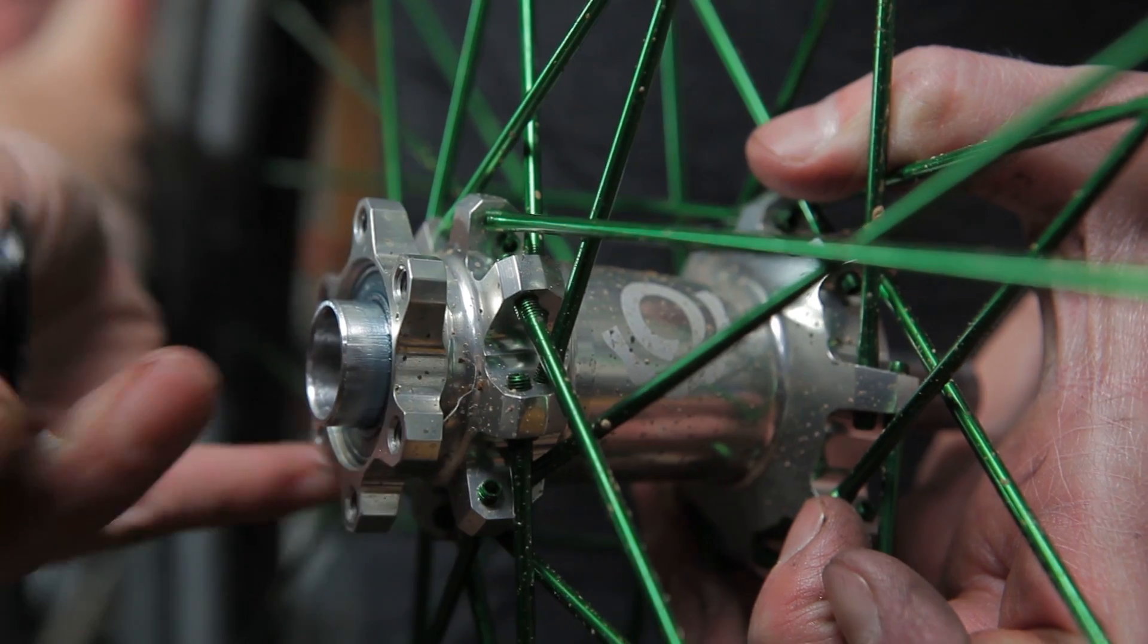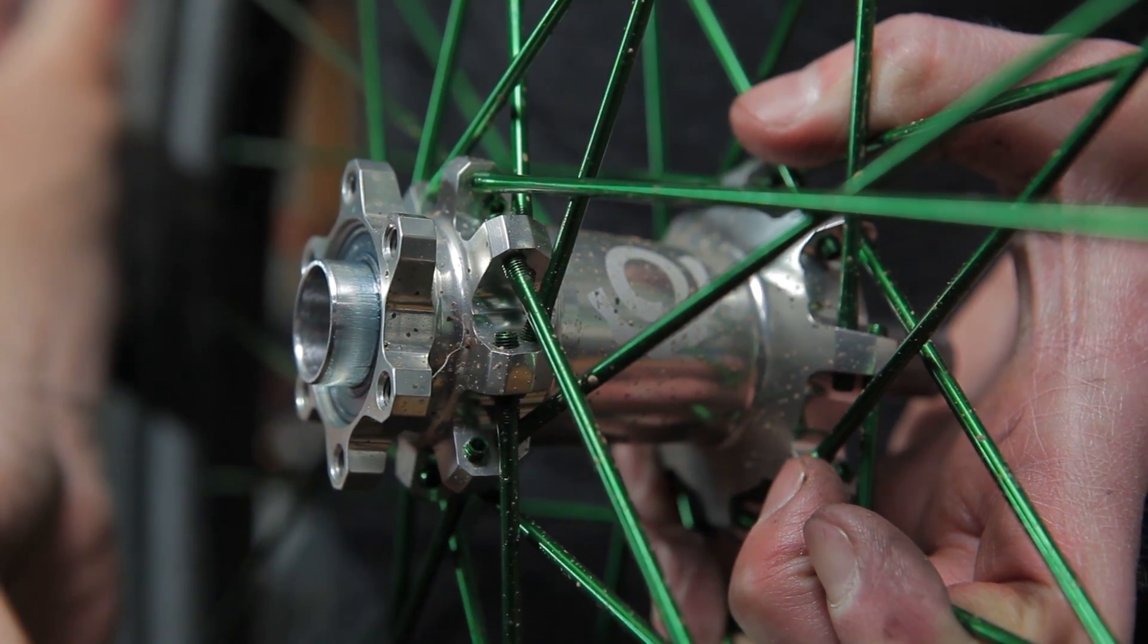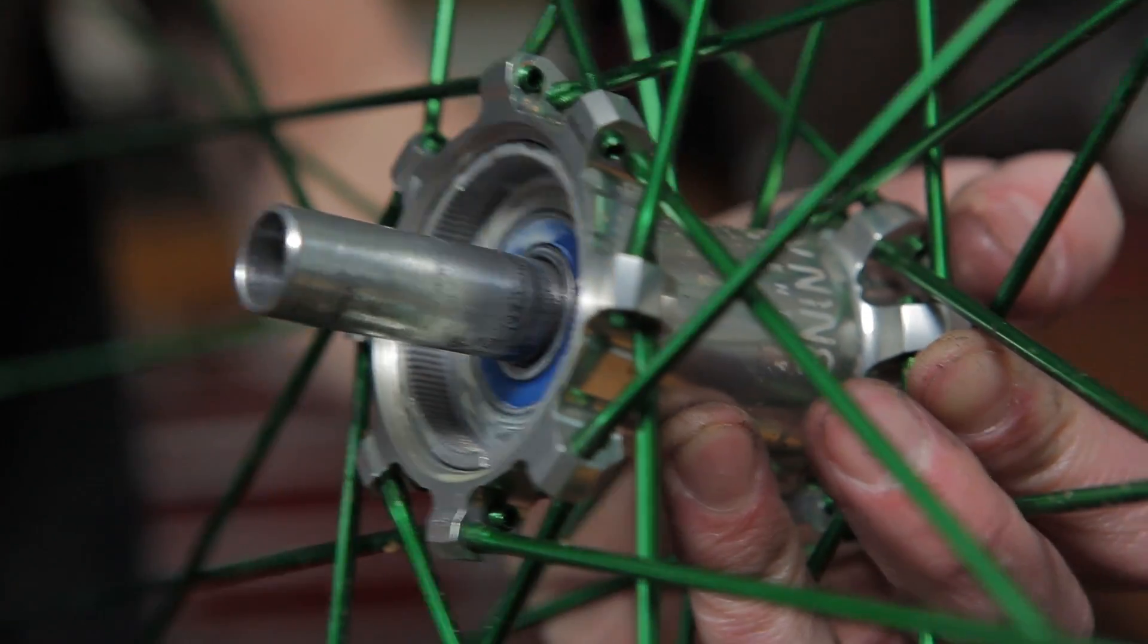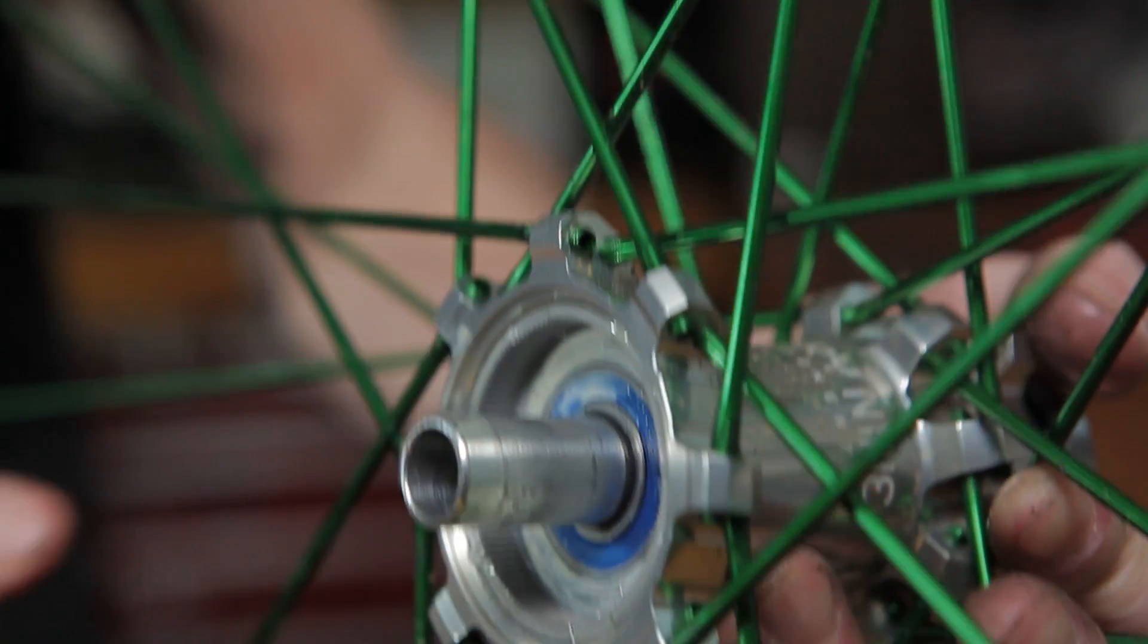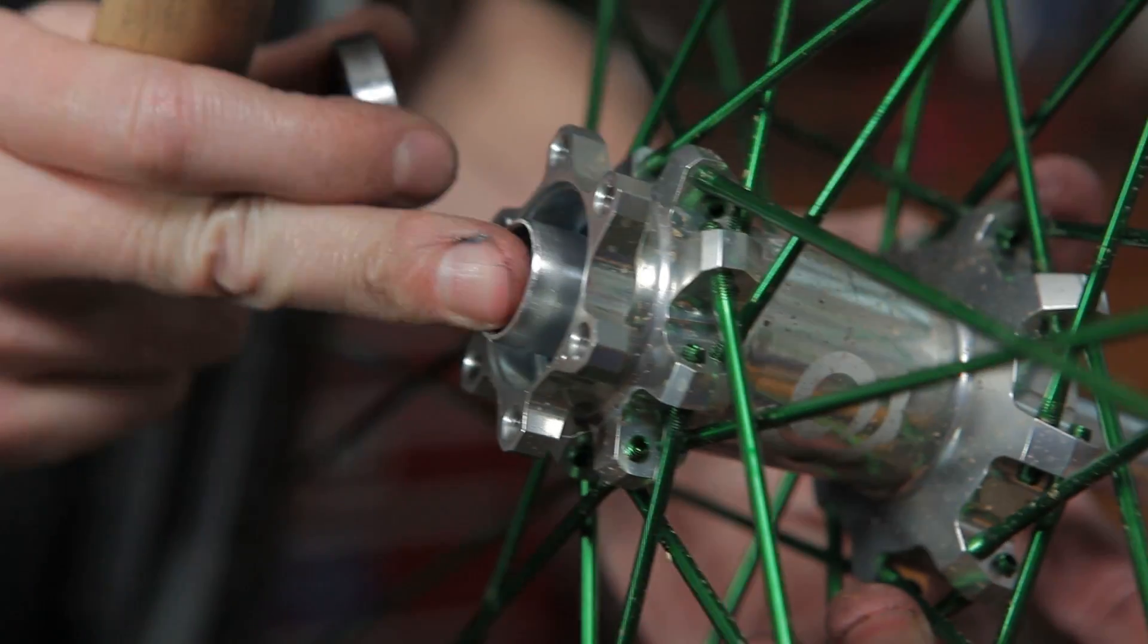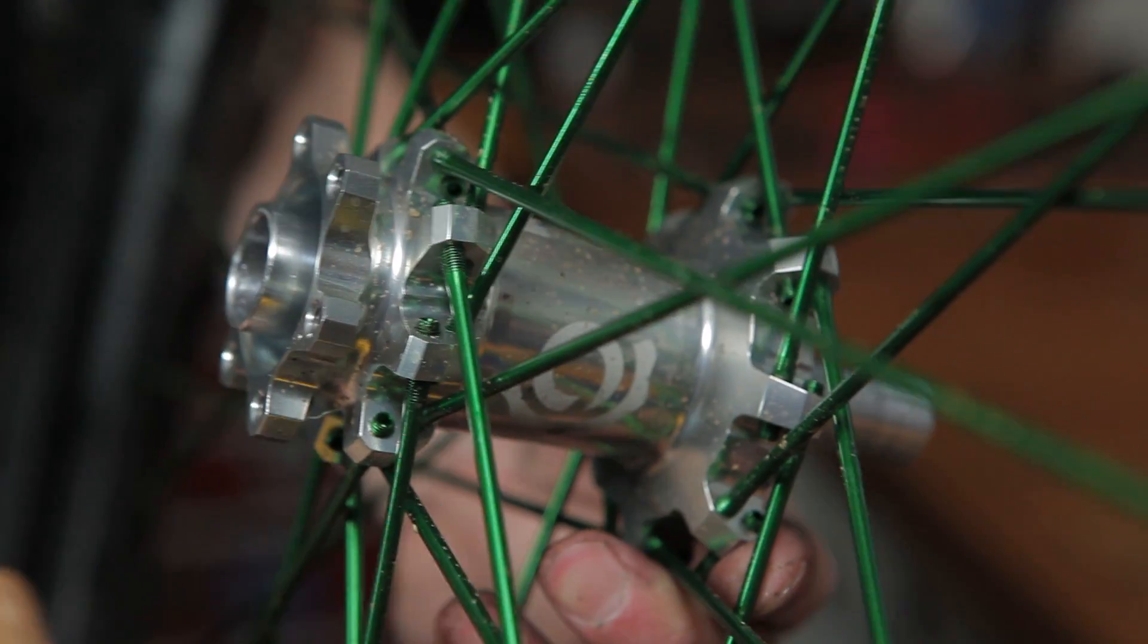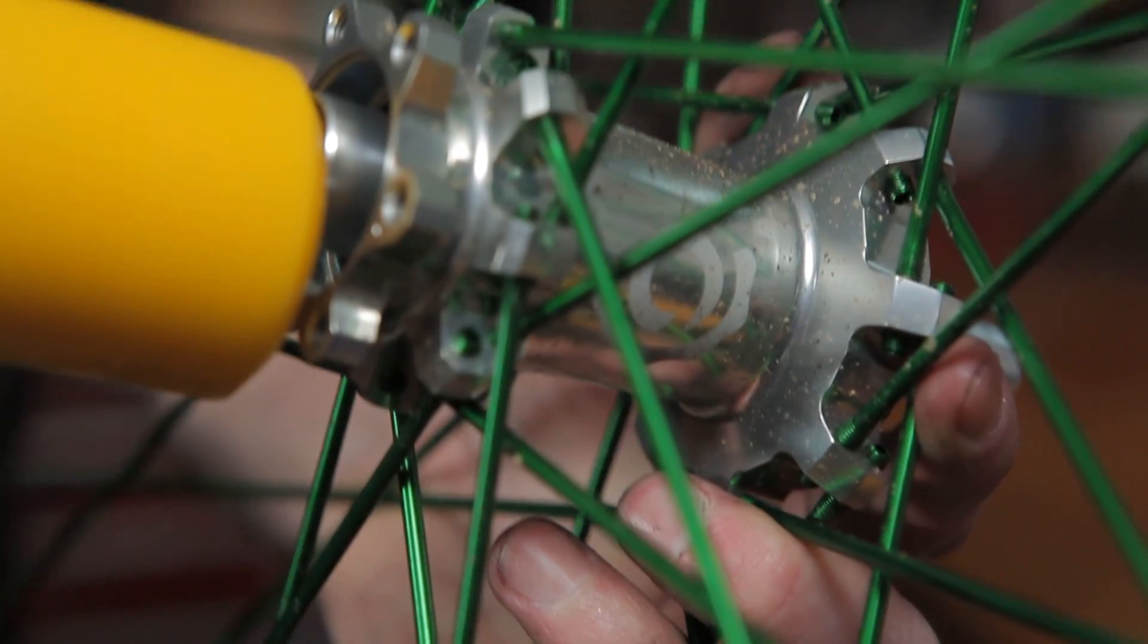As with Torch, use the axle to punch the hub shell bearings out. Start with the drive side and strike the axle directly with a mallet. Once you have the disc side bearing out of the way, you can slide the axle back through and use it to punch out the drive side bearing.